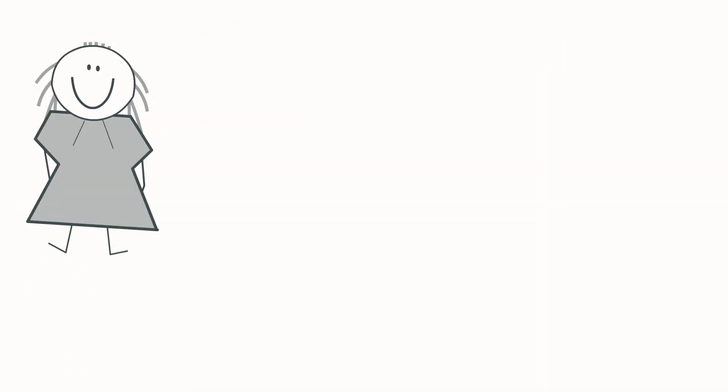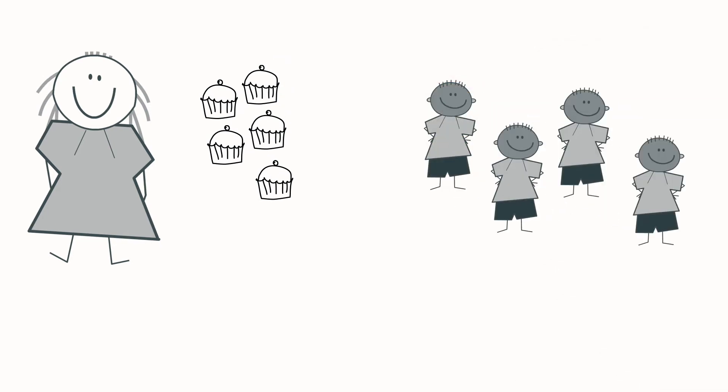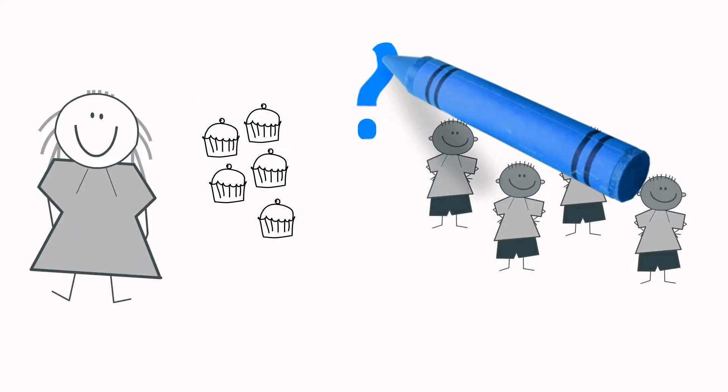But first the question. Mother brought home five cakes. How does she split it equally among four brothers?